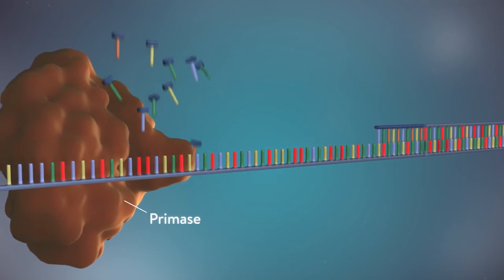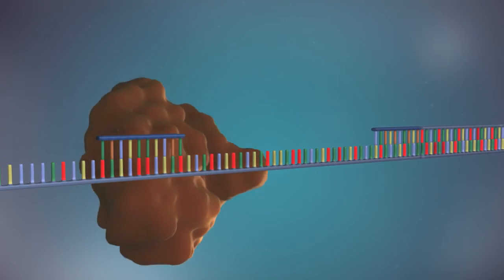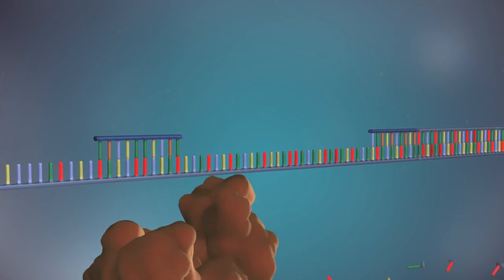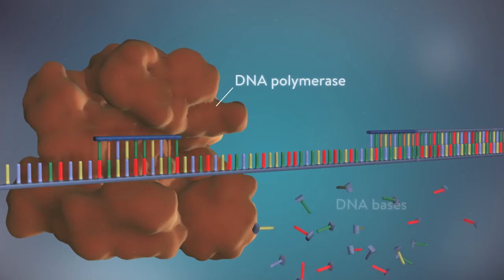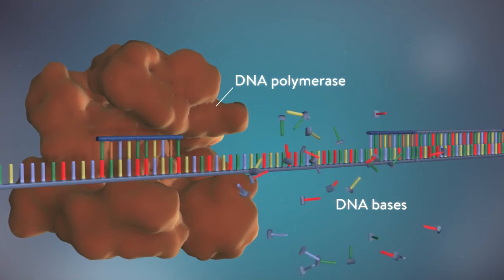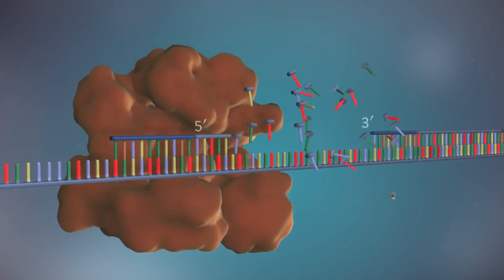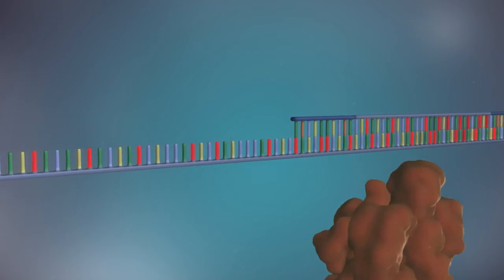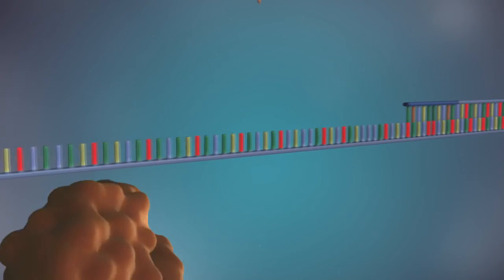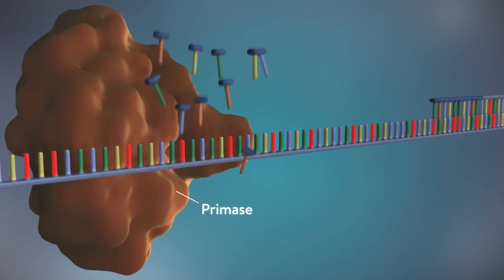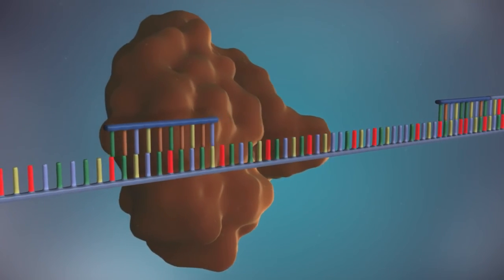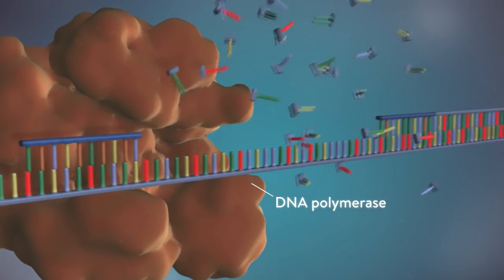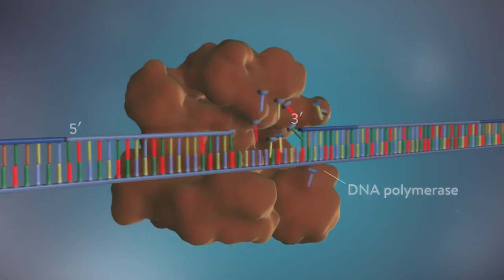Each fragment is started with an RNA primer. DNA polymerase then adds a short row of DNA bases in the 5' to 3' direction. The next primer is then added further down the lagging strand. Another Okazaki fragment is then made and the process is repeated again.